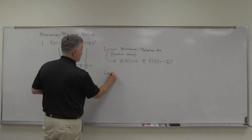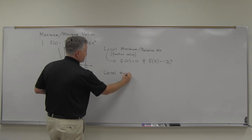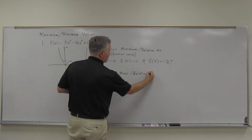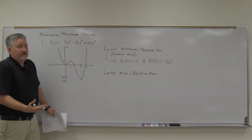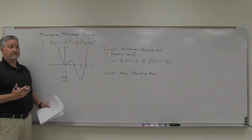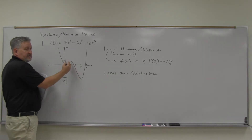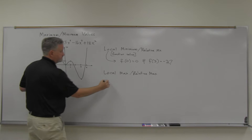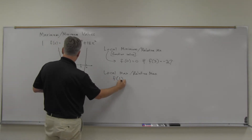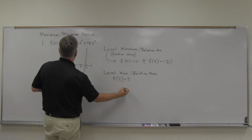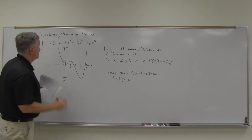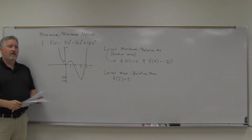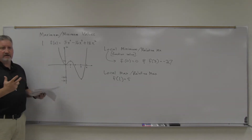The flip side is we have a local maximum, or a relative maximum — a function value that's greater than the ones around it. Those are the peaks, which in this case is at f of one, and I believe that's five. So that's the idea; it's pretty easy to pick them out from the graph.